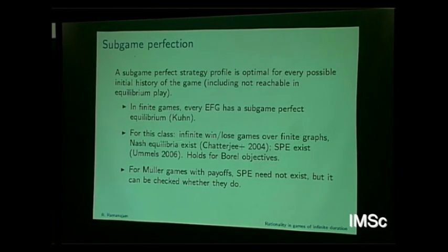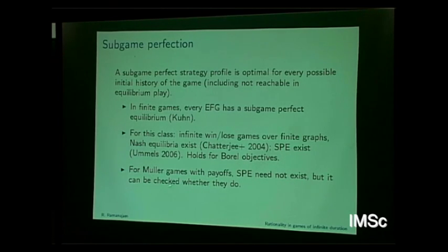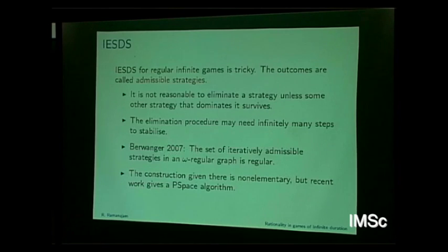For infinite win-lose games over finite graphs, it is not clear what is the right subgame perfect notion, because now you are talking about infinite subgames. What are the strategies you get from there that you compose to get strategies over the game? There is some appropriate notion you can define and show that Nash equilibrium and subgame perfect equilibrium exist and hold for Borel objectives. For Muller games with payoffs, subgame perfect equilibrium need not exist, but one can algorithmically check whether, given a graph, they exist or not. What about iterated elimination of strictly dominated strategies for regular infinite games? This is very tricky. The outcomes are generally called admissible strategies.